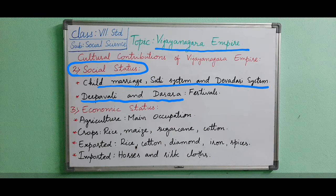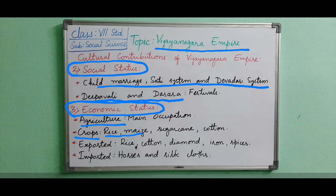Now next we will look at the economic system. Agriculture was the main occupation — their major business or profession was agriculture. Their major crops were rice, maize, sugarcane, and cotton. Kings of Vijayanagara encouraged agriculture by building tanks and wells.